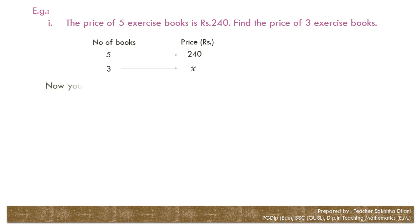The price of 5 exercise books is 240 rupees. Find the price of 3 exercise books. First, it's important to identify the two quantities: number of books and price. Let's illustrate it using an arrow diagram. The price of 5 books is 240. The price of 3 books? Let's assume it as X rupees. Now you can write it as 5 to 3 equals 240 to X.